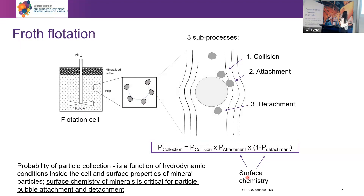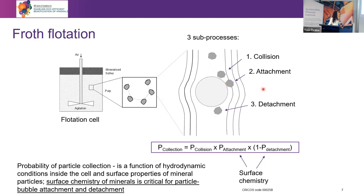Let's zoom in to the flotation tank and look at how particles interact with bubbles. Here we can see an air bubble surrounded by small mineral particles attached to it. For this process to happen and occur efficiently, three sub-processes need to happen: first the particles need to collide with a bubble, then they need to be sufficiently hydrophobic to attach to the bubble, and then they need to resist all the turbulence in the system and not detach from the bubble until they reach the top of the flotation cell. The probability of collecting a mineral particle is the product of the probability of collision, attachment, and one minus detachment.